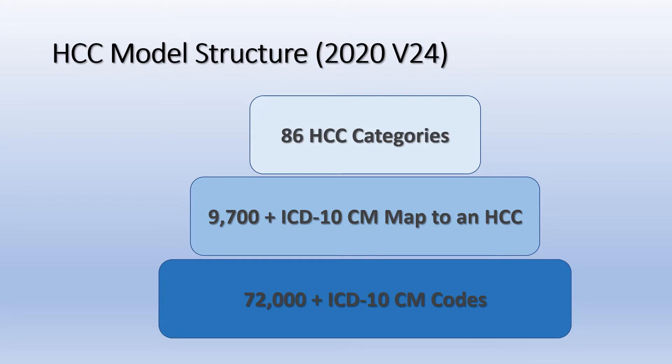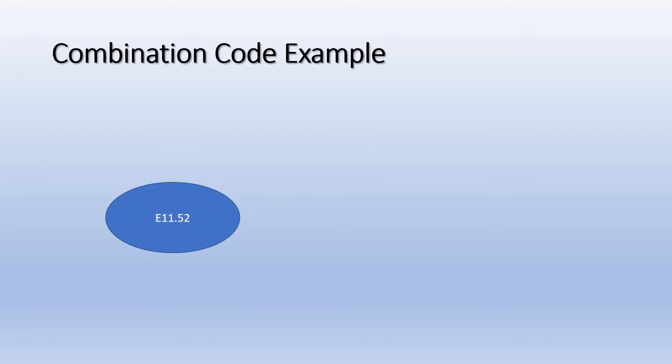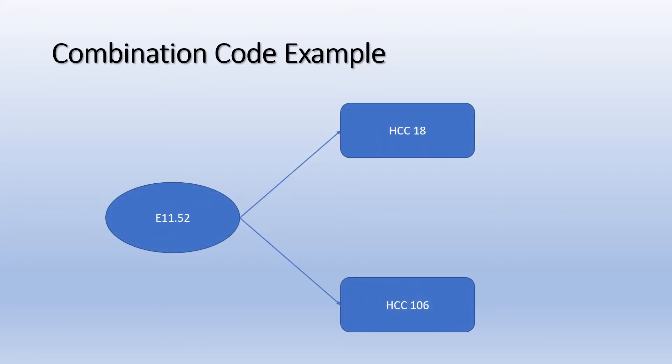Here is an example: ICD-10-CM code E1152 maps to two HCCs — 18 and 106 — for model V24 CMS-HCC and R payment HCCs for CMS-HCC model V24 for the 2020 payment year. In this situation, you would use all two HCCs and their corresponding coefficients, if you do not already have these HCCs in the patient's profile, to calculate the RAF.